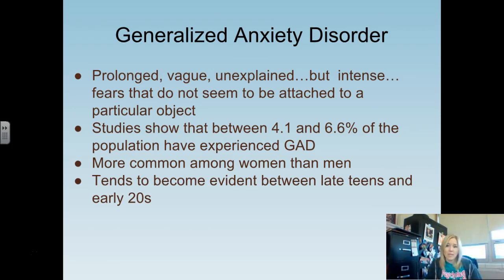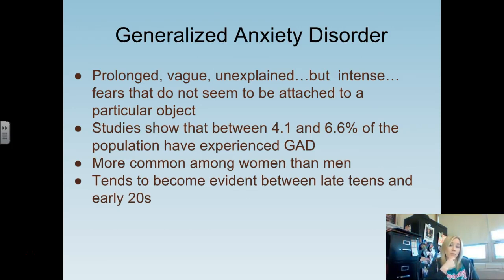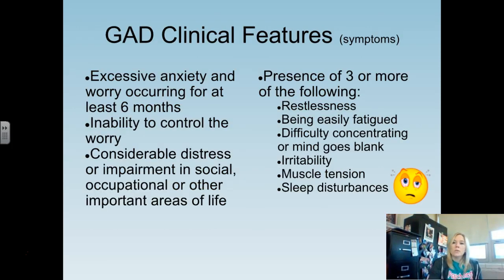Common presentations of GAD include obsessive worries about health and finances. For teens in particular, it's often school and social circumstances — comparing themselves with peers. Studies show that anywhere between four to almost seven percent of the population has GAD. It is more common in women than in men and tends to become more evident in the late teens to early 20s, though earlier diagnosis is possible.